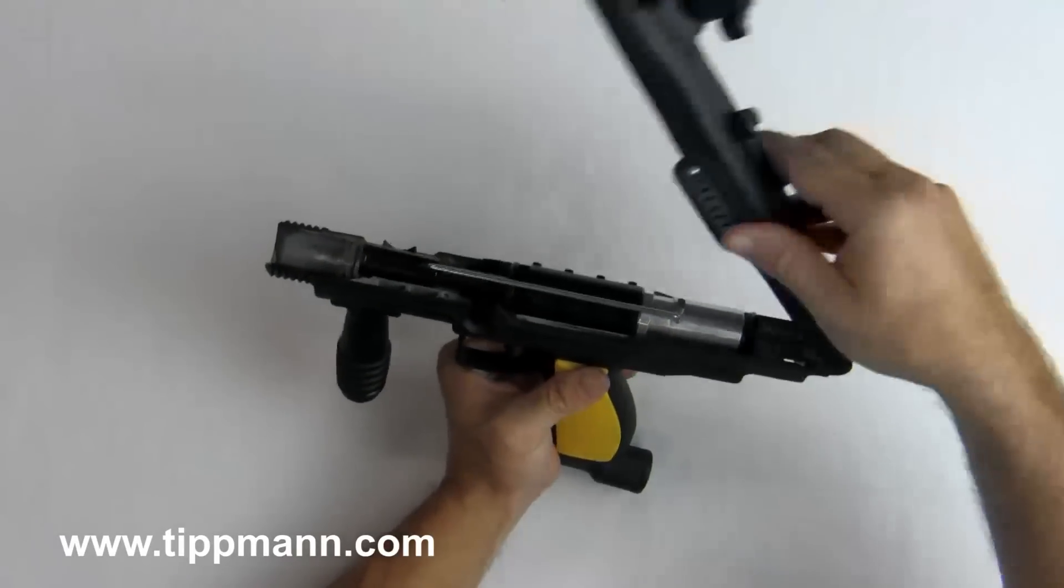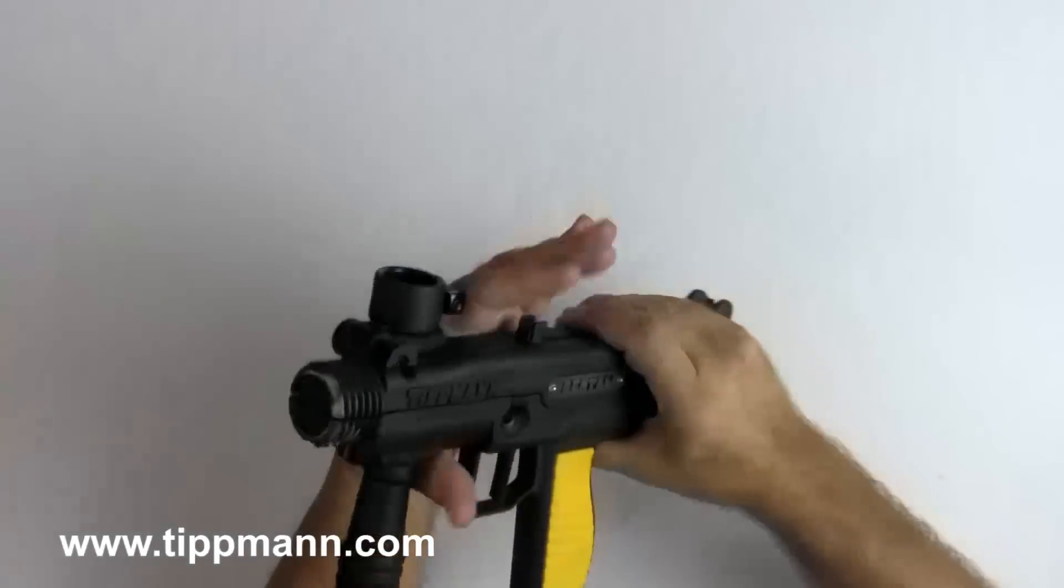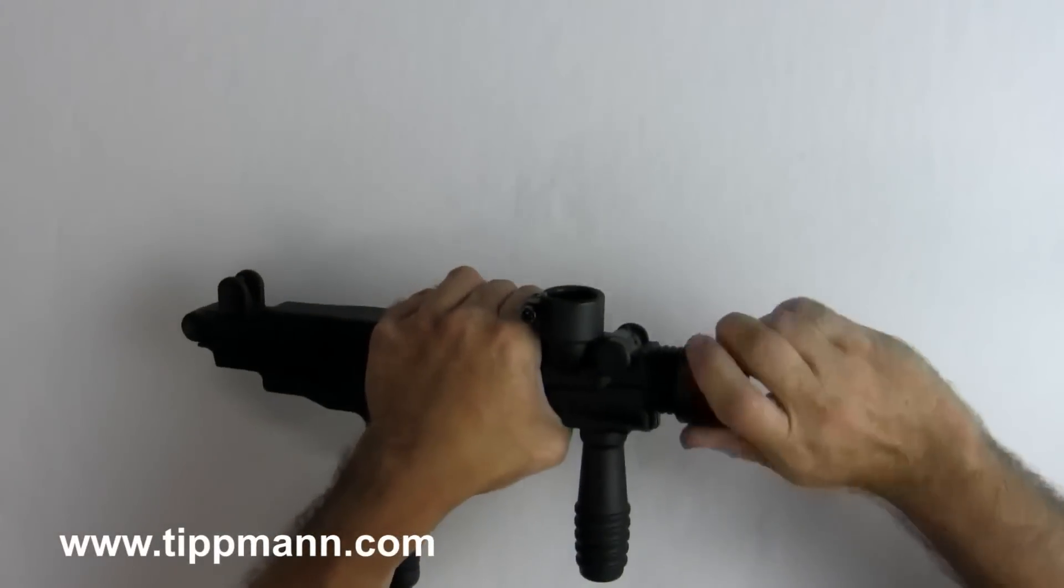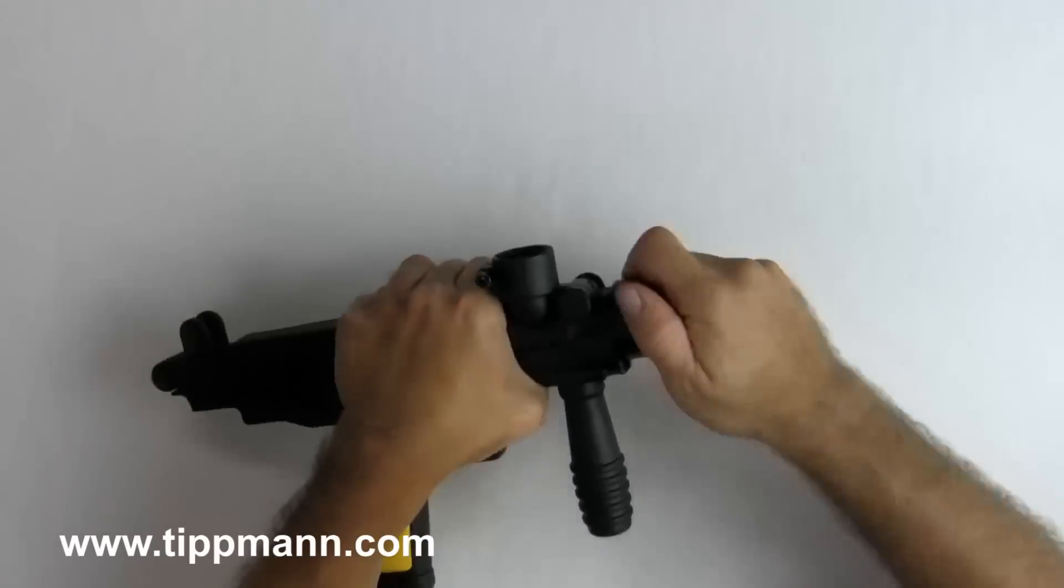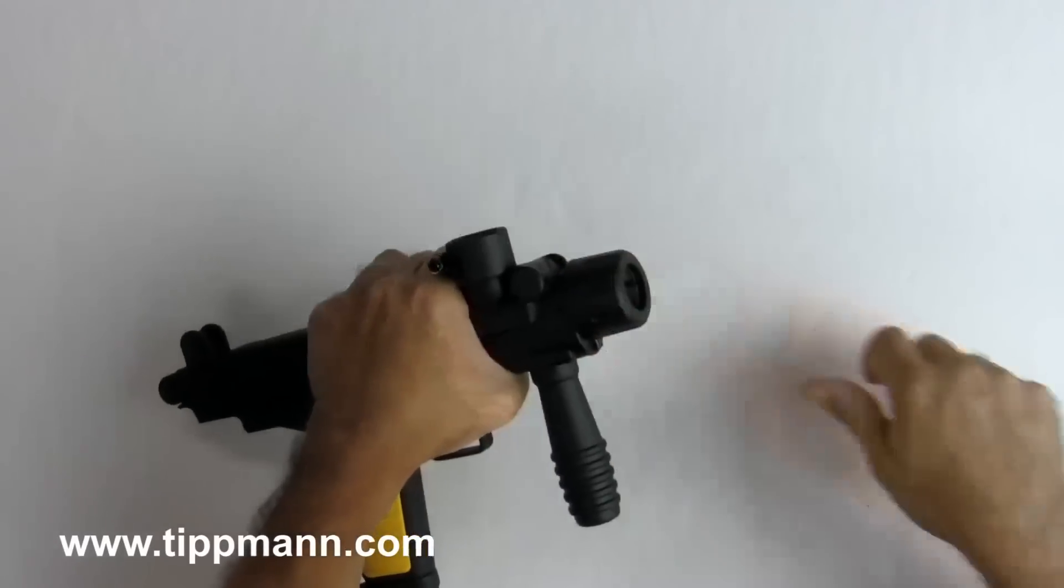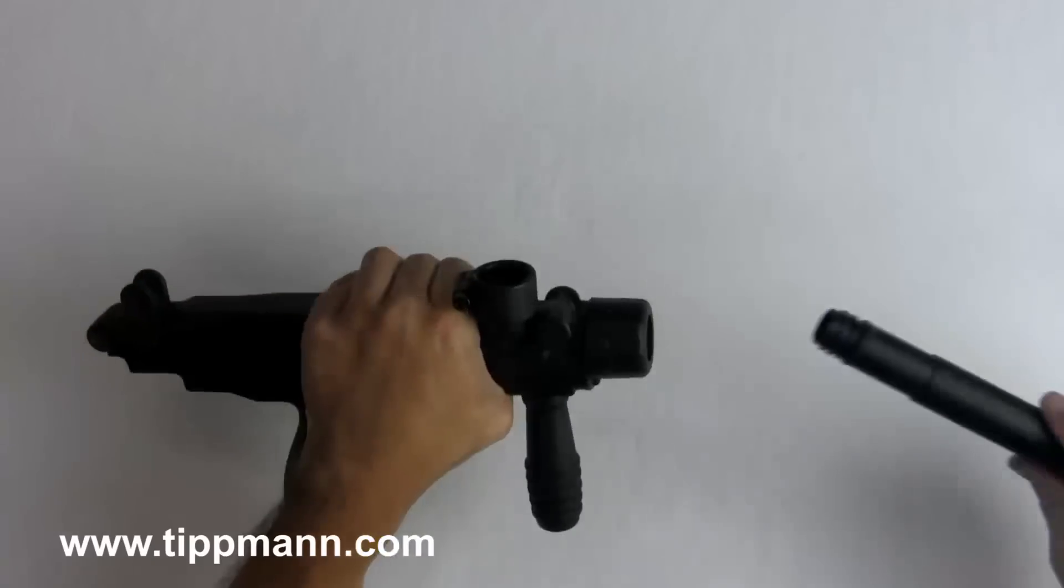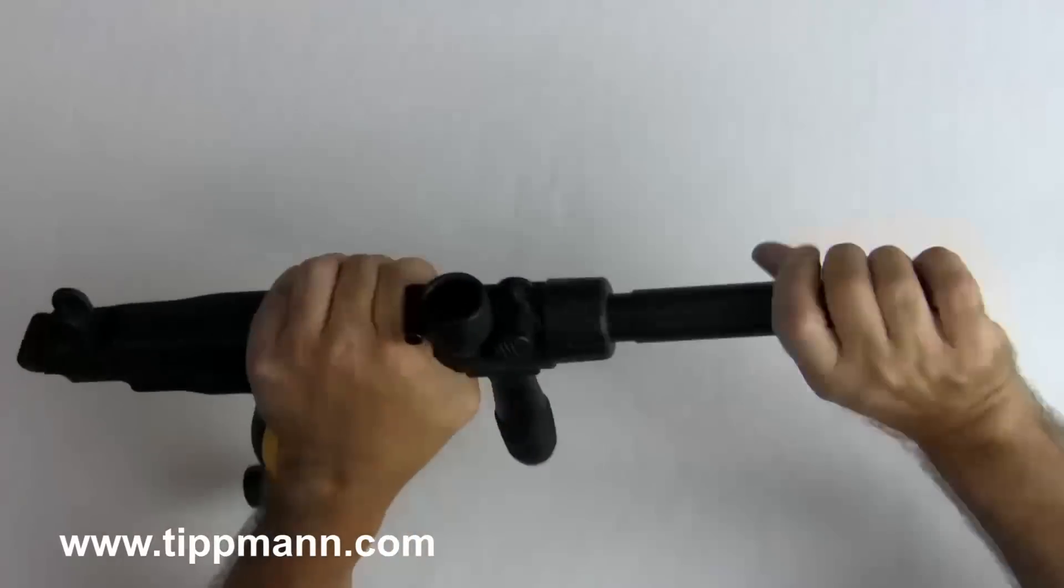And go ahead and put your receiver top back on. Screw on the barrel nut and you'll know it's on when it clicks and snaps into position. And then go ahead and screw the barrel back in.